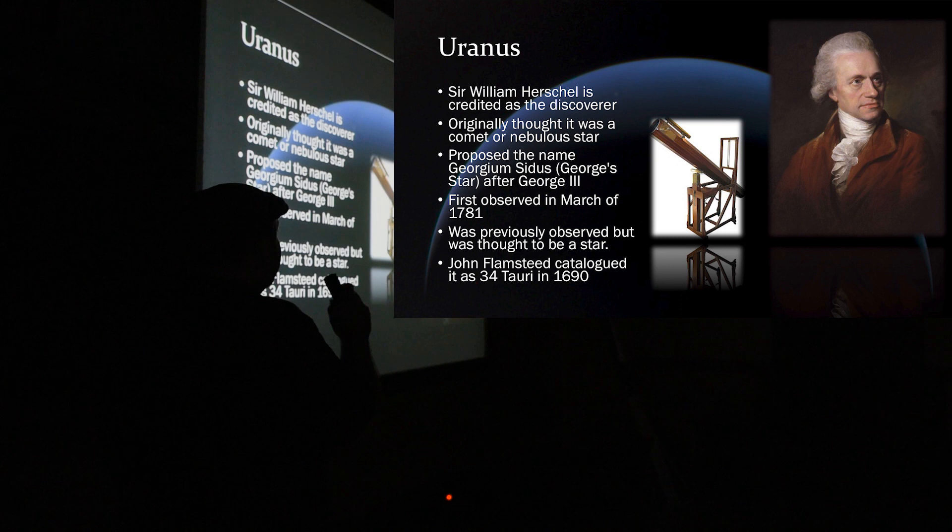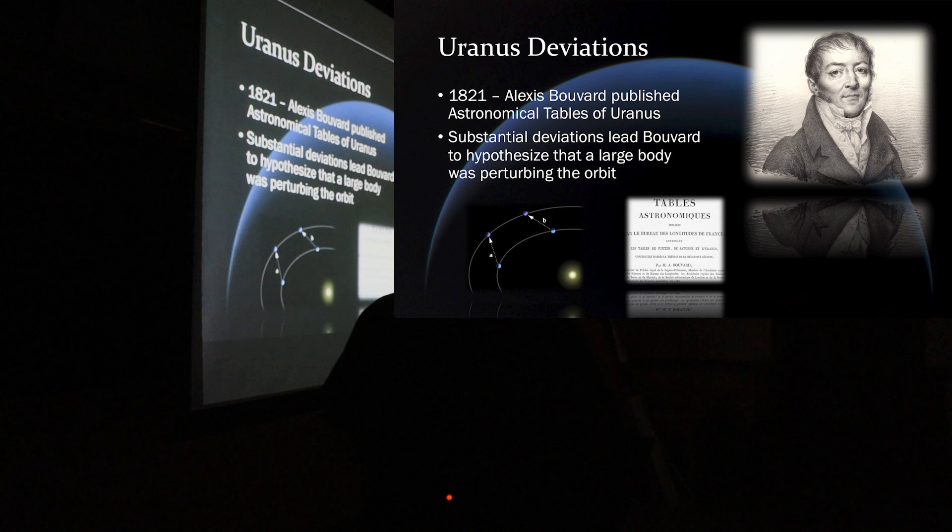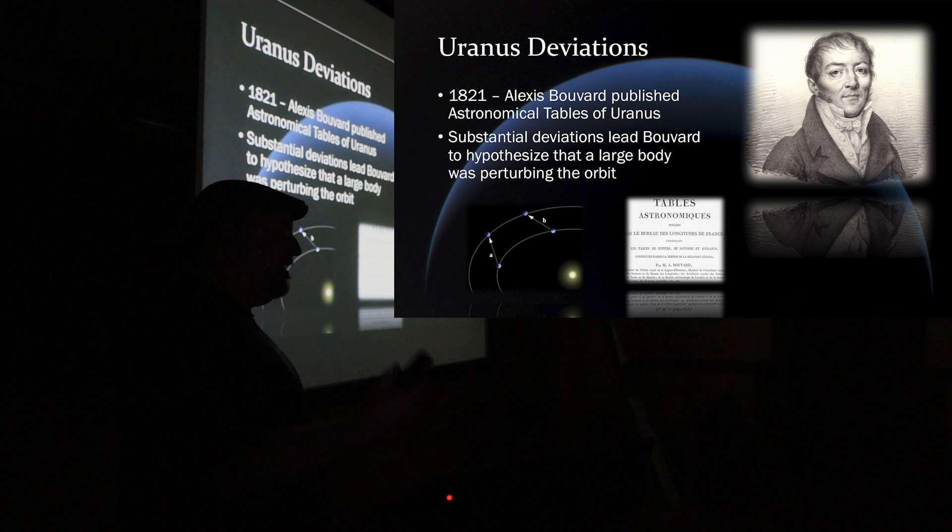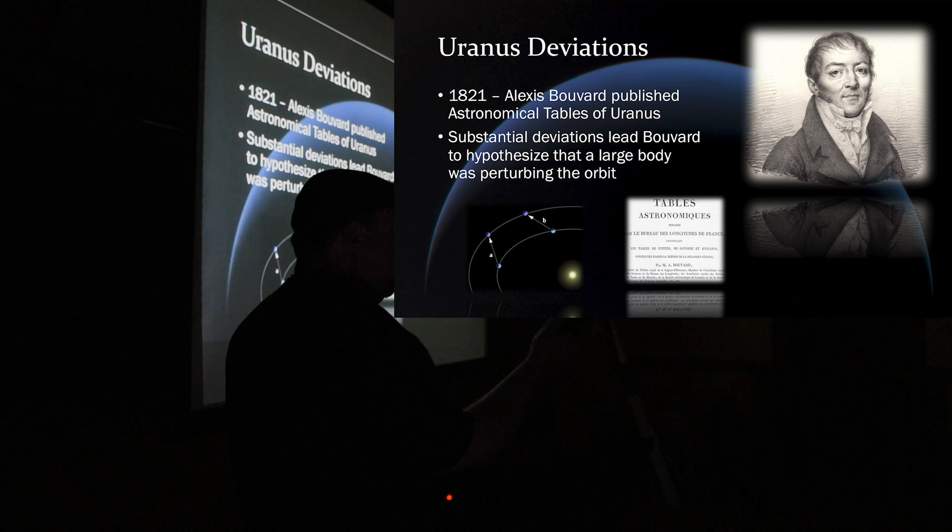So, anyway, so, the discovery of Uranus is very important to how Neptune was discovered. Remember, I was talking about those astronomical tables. Well, there was a French astronomer by the name of Alexis Bouvard. He produced these astronomical tables for the planets, and he was doing one for Uranus. There was a problem.